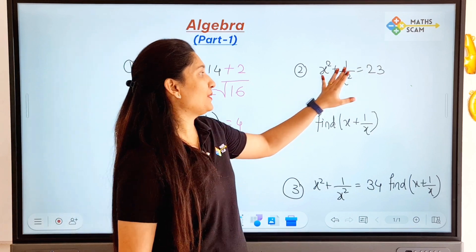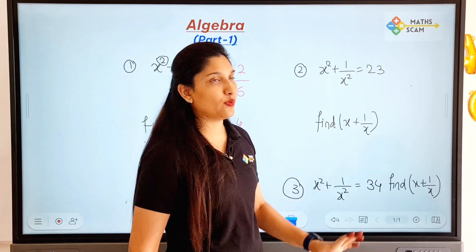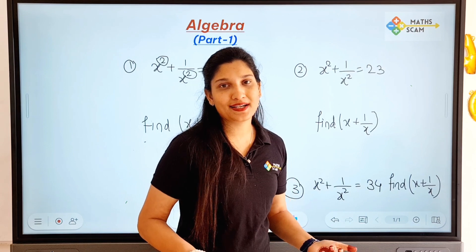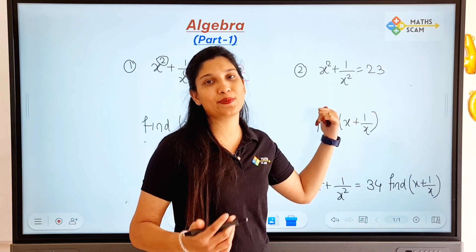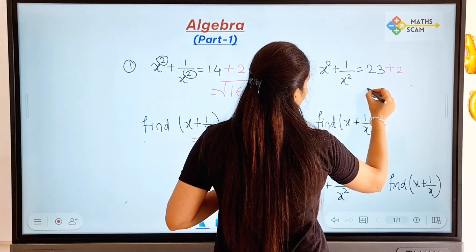The next question is x² + 1/x² = 23, so you have to find out x + 1/x. So how to find it out? Here we have square, so 23 plus 2 is 25.